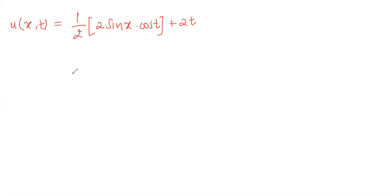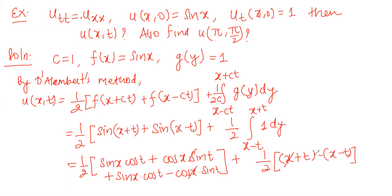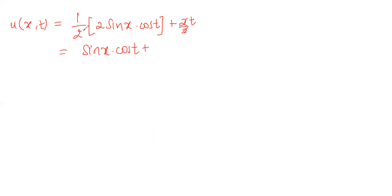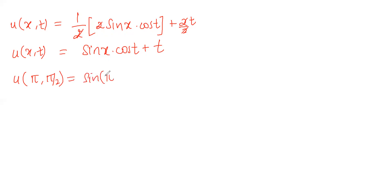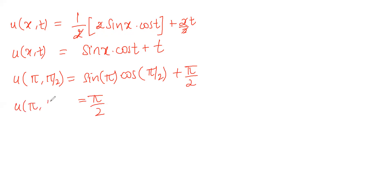After cancellation the twos cancel and we get u(x, t) = sin(x)cos(t) + t. Now evaluating at (π, π/2): the first term sin(π)cos(π/2) = 0, so the entire first term becomes zero, leaving just π/2. Therefore u(π, π/2) = π/2.